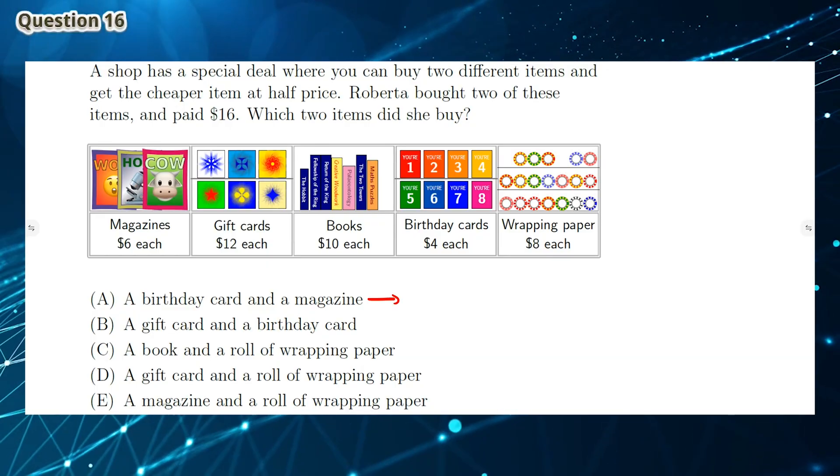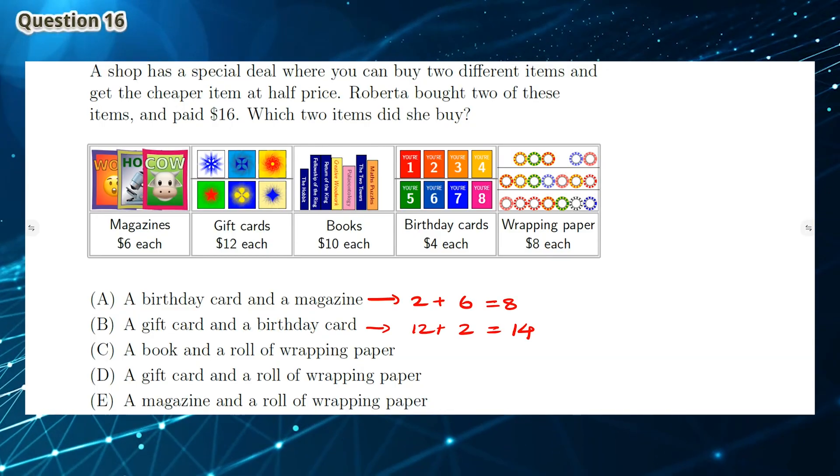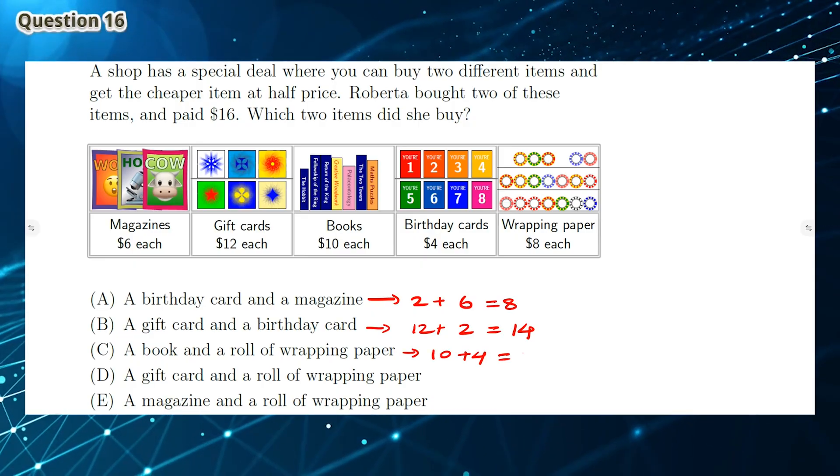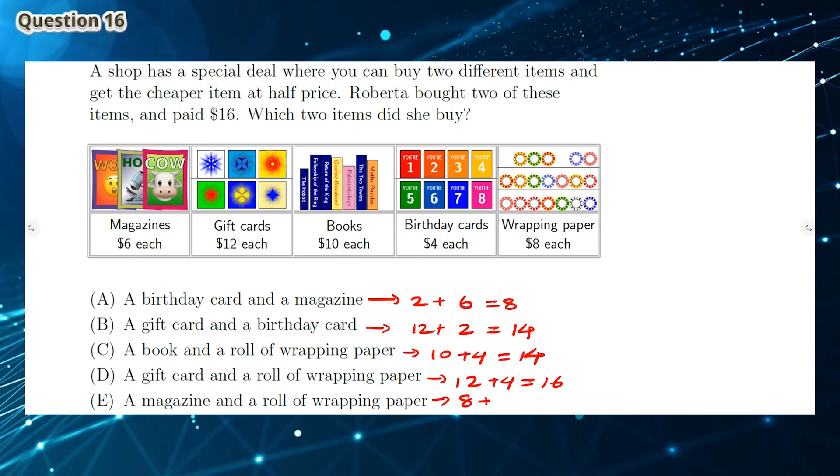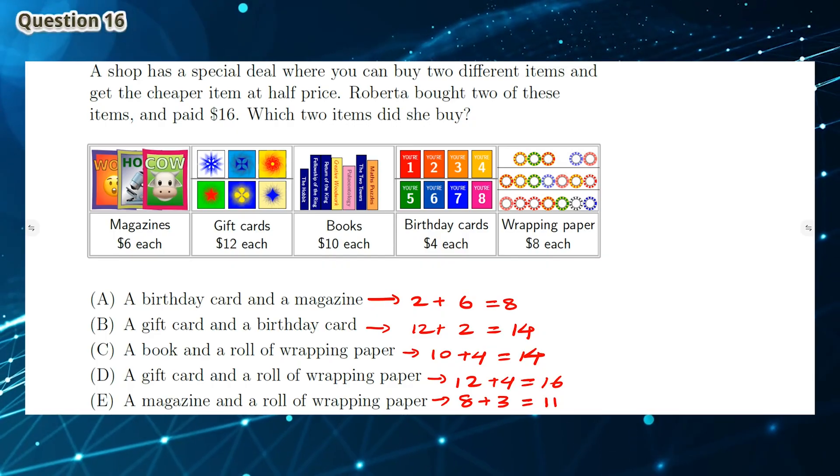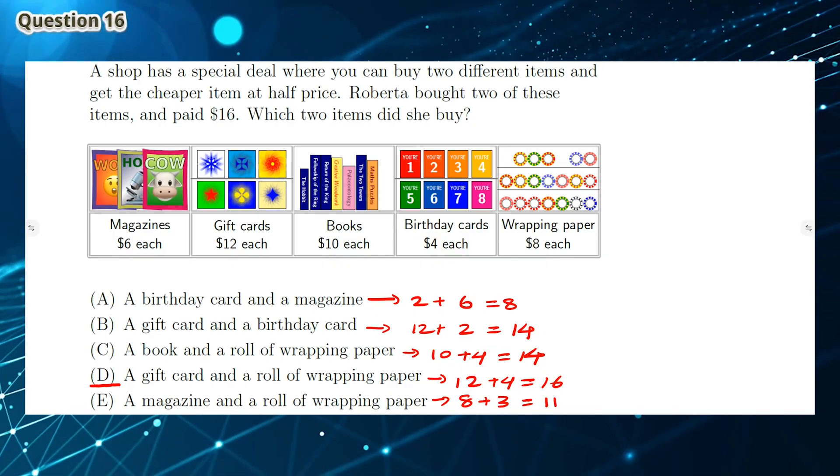Question 16: Let's write each option where the cheaper item is bought at half price. The only option that gives a total of $16 is option D, a gift card and a roll of wrapping paper. So the answer is D.